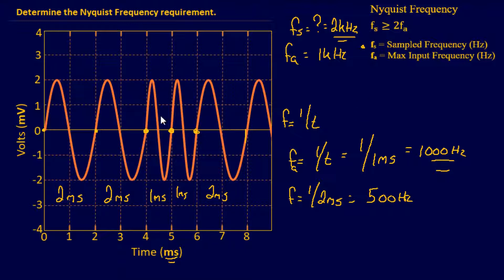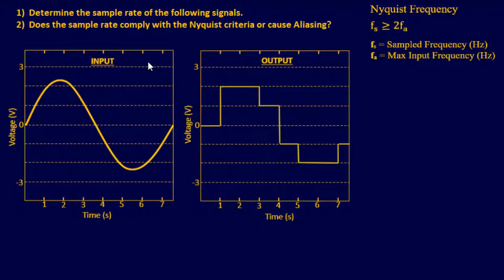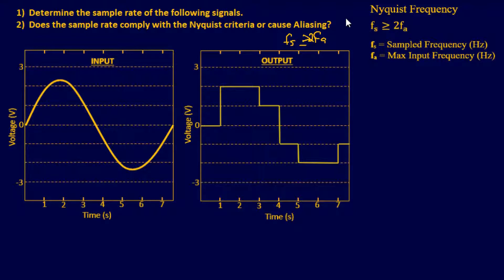It's always good to get oscilloscope questions to prevent getting rusty. For our last problem, this one goes a little deeper to explain sampling. An input signal and an output signal are provided for these waveforms. The input signal is an analog waveform and the output signal illustrates a digitized waveform. We want to determine the sample rate of the following signals and whether the sample rate complies with the Nyquist criteria or causes aliasing.